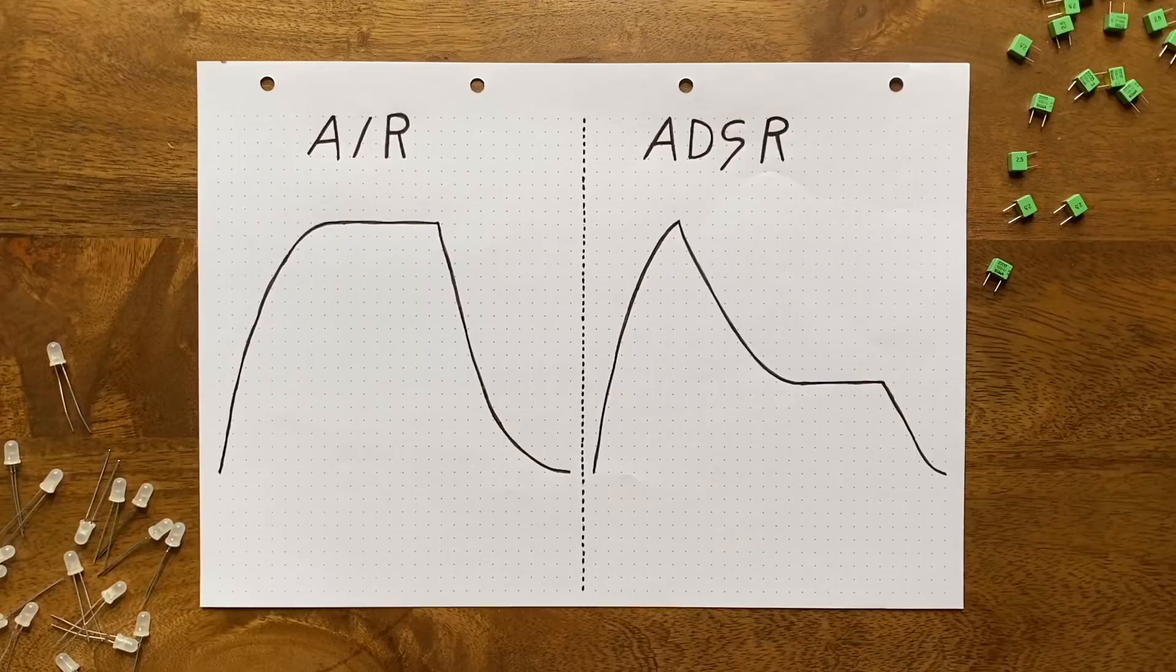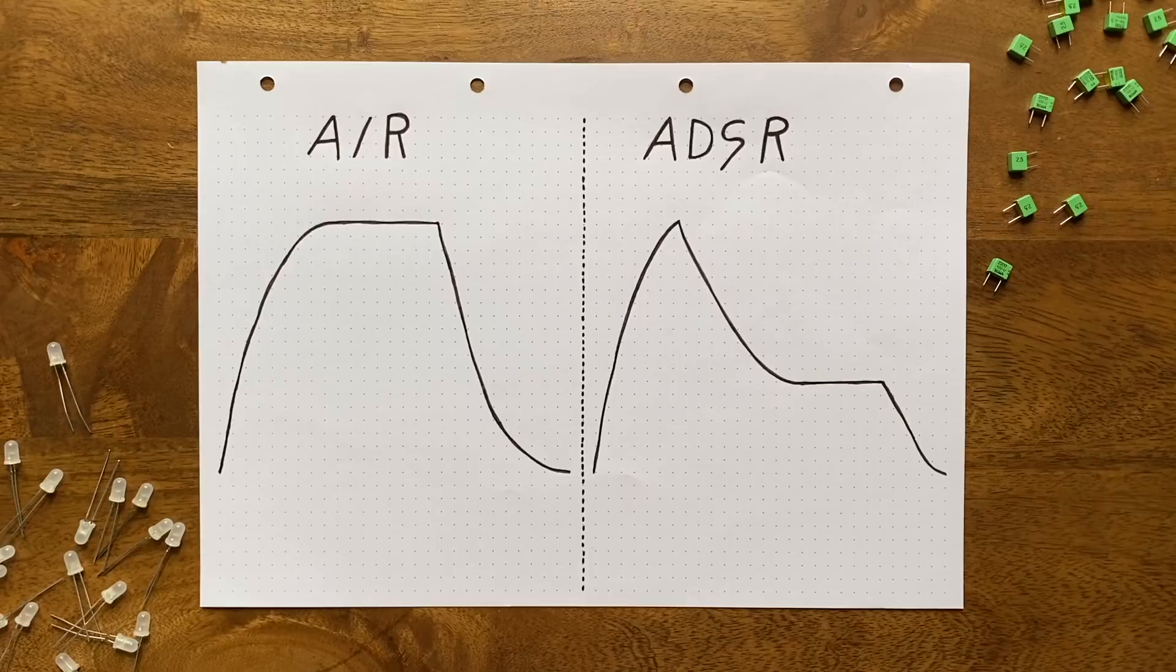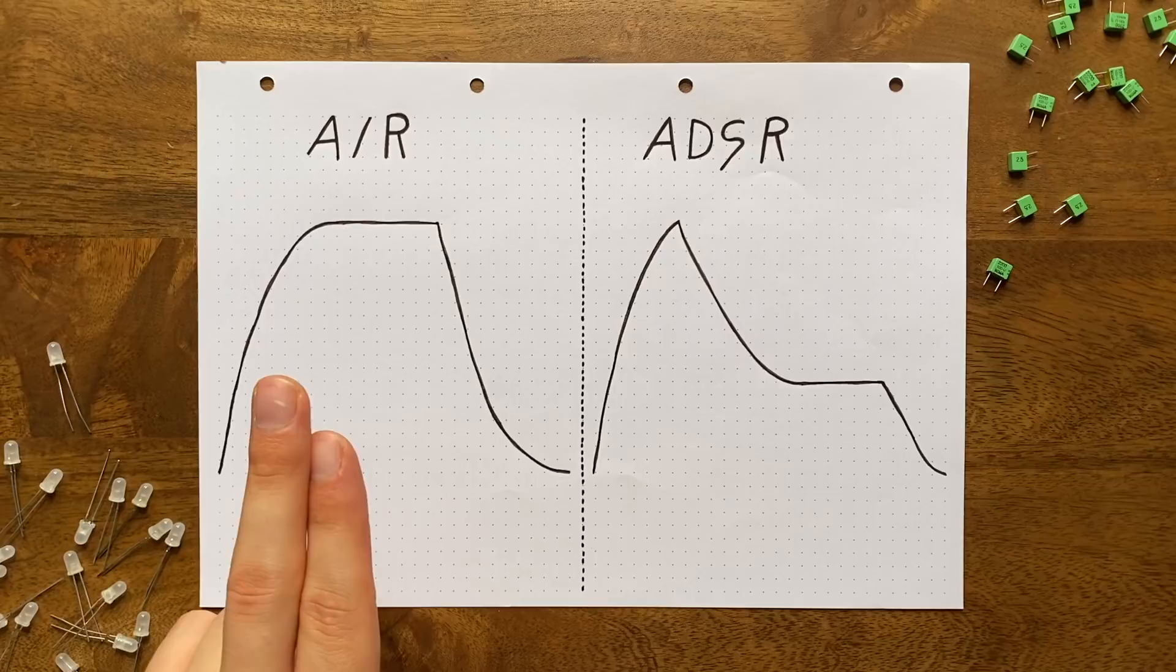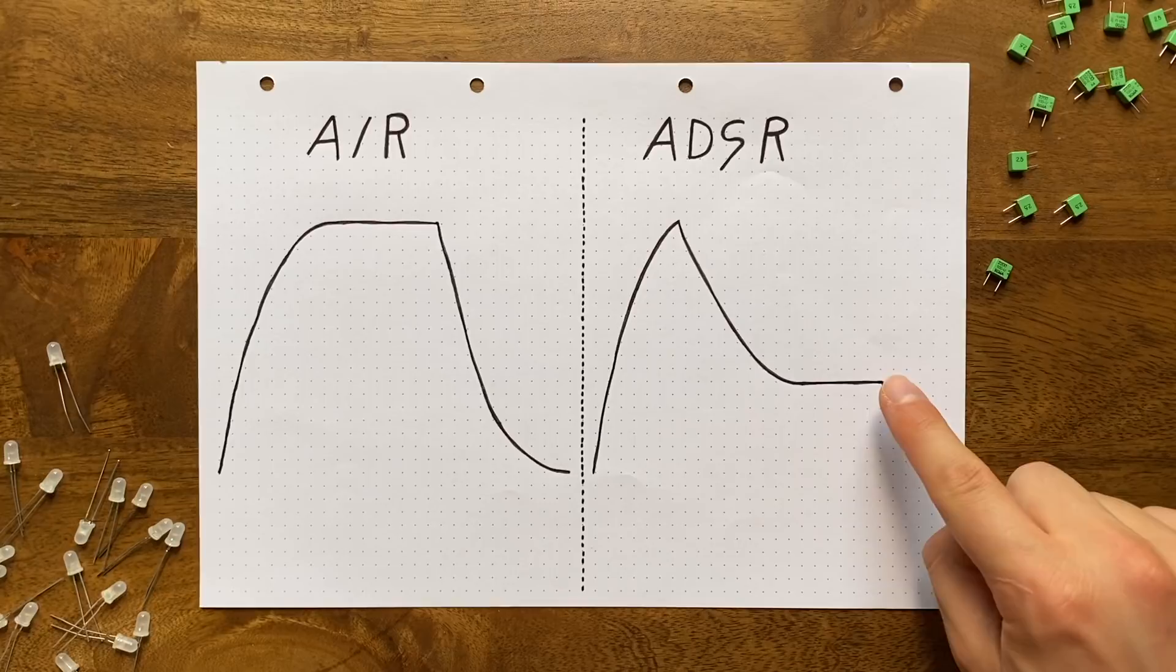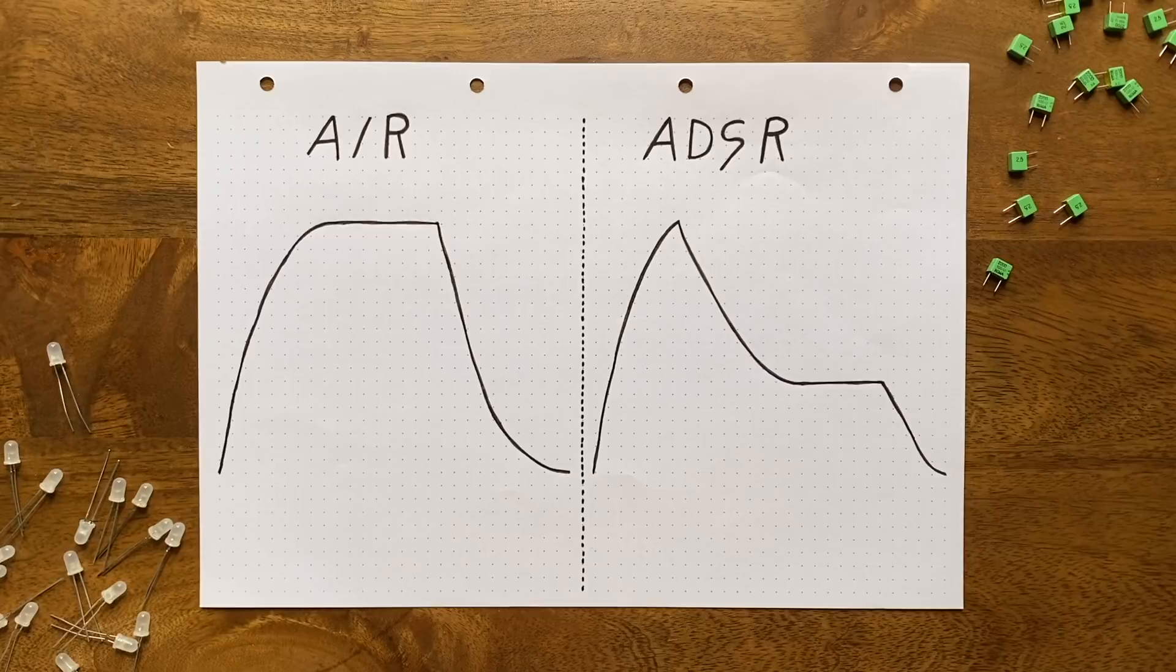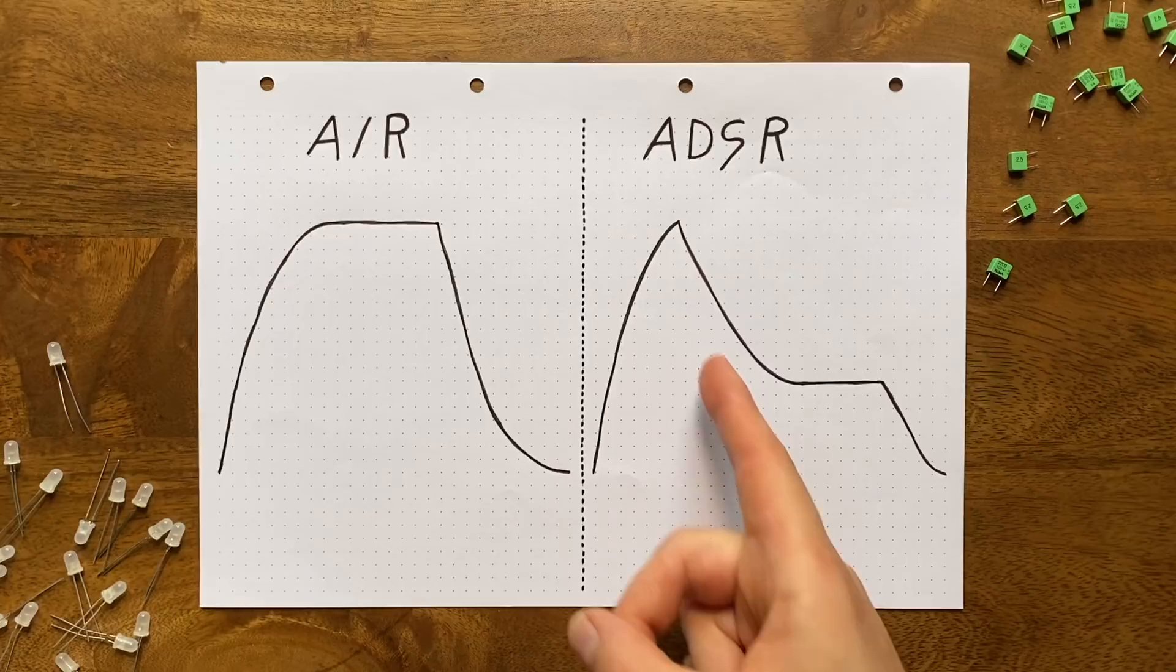And while we could leave it there, I'd rather put a bit more effort in to give us finer control over the envelope curve's shape. On the left side here I've drawn up what our current circuit is capable of producing: a simple attack-release curve. On the other side we have a more complex attack-decay-sustain-release curve. What's the difference? Well, while both curves have an attack and a release phase, the one on the right adds a decay phase and the ability to set a specific sustain level.